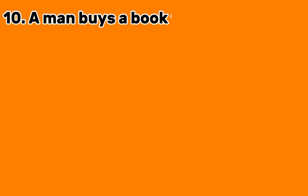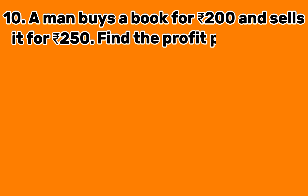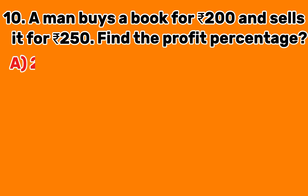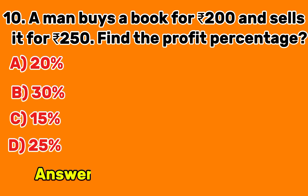Question 10: A man buys a book for 200 Indian rupees and sells it for 250 Indian rupees. Find the profit percentage. A. 20%. B. 30%. C. 15%. D. 25%. Answer D: 25%.